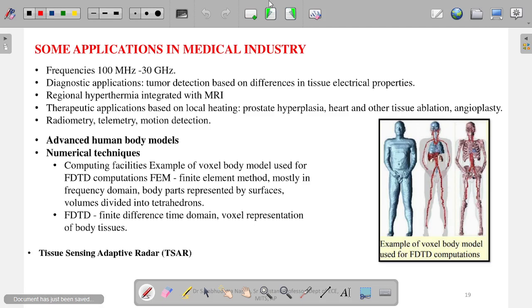Next is some applications in industry. In industry, the frequency used is 100 megahertz to 30 gigahertz. Diagnostic application: tumor detection based on different tissue electrical properties. As you know, if an electromagnetic wave is propagating in a wave, the electrical property affects a lot—the epsilon value. When there is a cancer cell, the epsilon value and a normal cell epsilon value is different. In that case, the reflected wave can be properly analyzed to know whether the cell is cancerous or not.